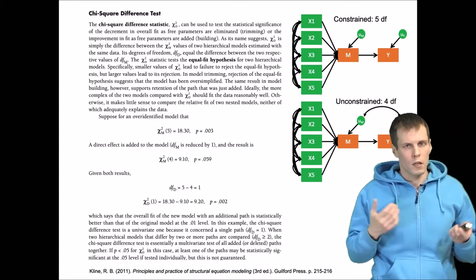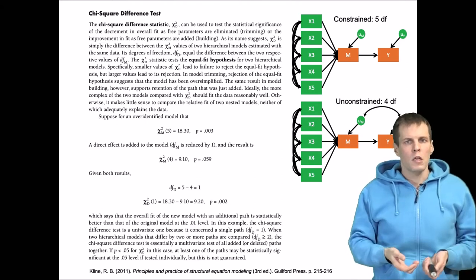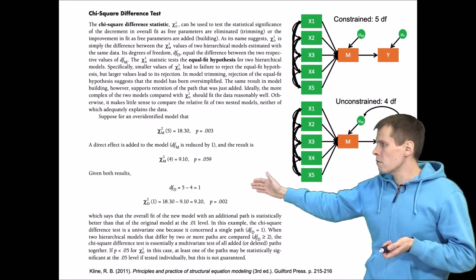The first model has five degrees of freedom and the second model has four degrees of freedom. How the comparison works is that we calculate the difference in chi-square and difference in degrees of freedom.